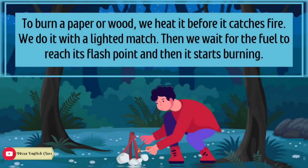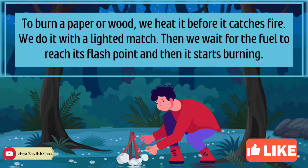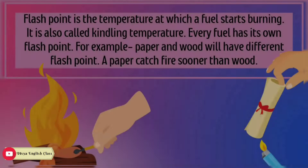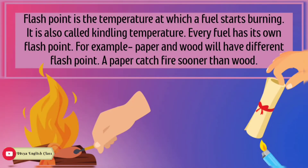To burn paper or wood, we heat it before it catches fire — we do it with a lighted match. Then we wait for the fuel to reach its flashpoint, and then it starts burning. Flashpoint is the temperature at which a fuel starts burning, and it is also called kindling temperature. Every fuel has its own flashpoint. For example, paper and wood will have different flashpoints.